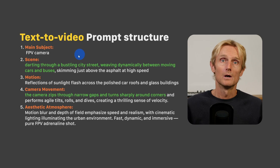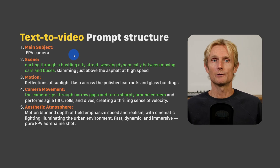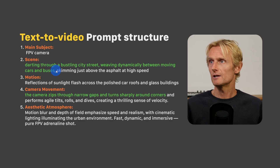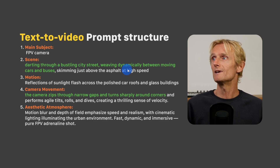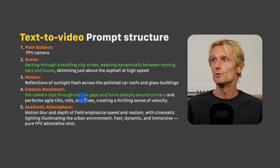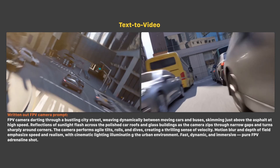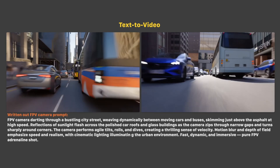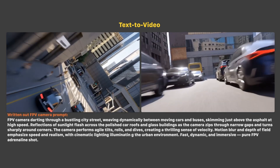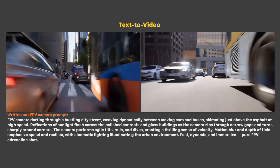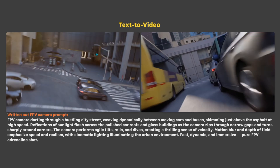Moving to a first-person view camera move using the text-to-video prompt structure: main subject was 'FPV camera,' scene was 'darting through a bustling city street weaving dynamically between moving cars and buses,' and camera movement was 'the camera zips through narrow gaps and turns sharply around corners.' This gave two results — the one on the left is more dynamic and almost flawless, while the one on the right has no visible flaws but looks a bit more subtle. Both are great examples of what this type of camera prompting can achieve with HILUO 2.3.